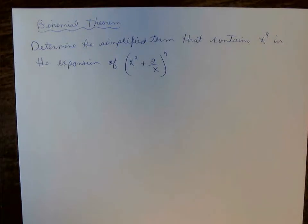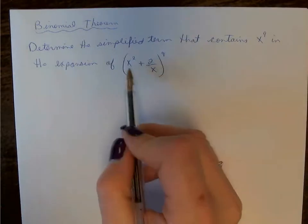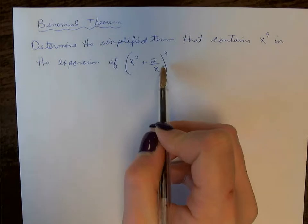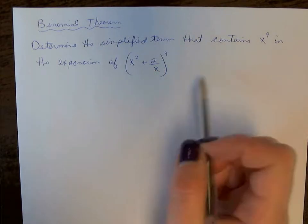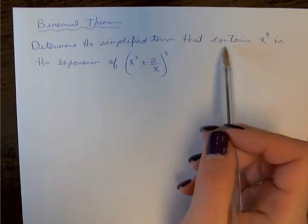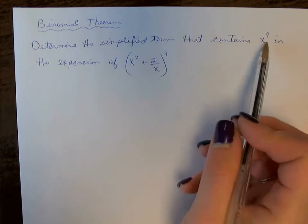We need to find a simplified term that contains x to the exponent 9 in the expansion of the binomial given here. We don't want to expand the entire binomial until we find the term containing x^9, so we want to determine what term would have x^9 in it.